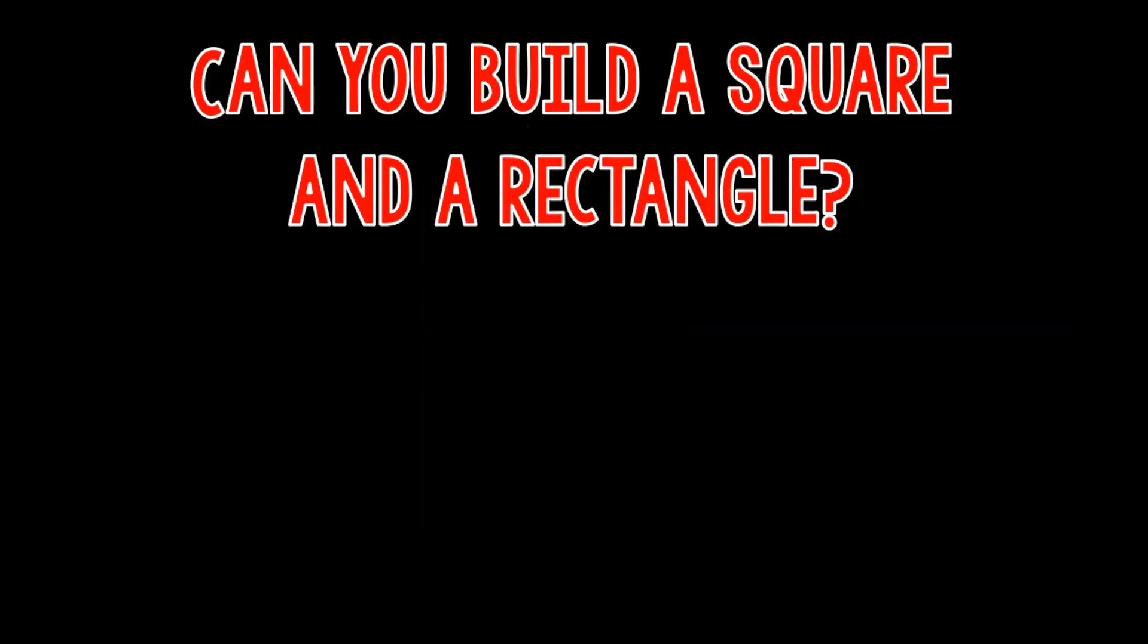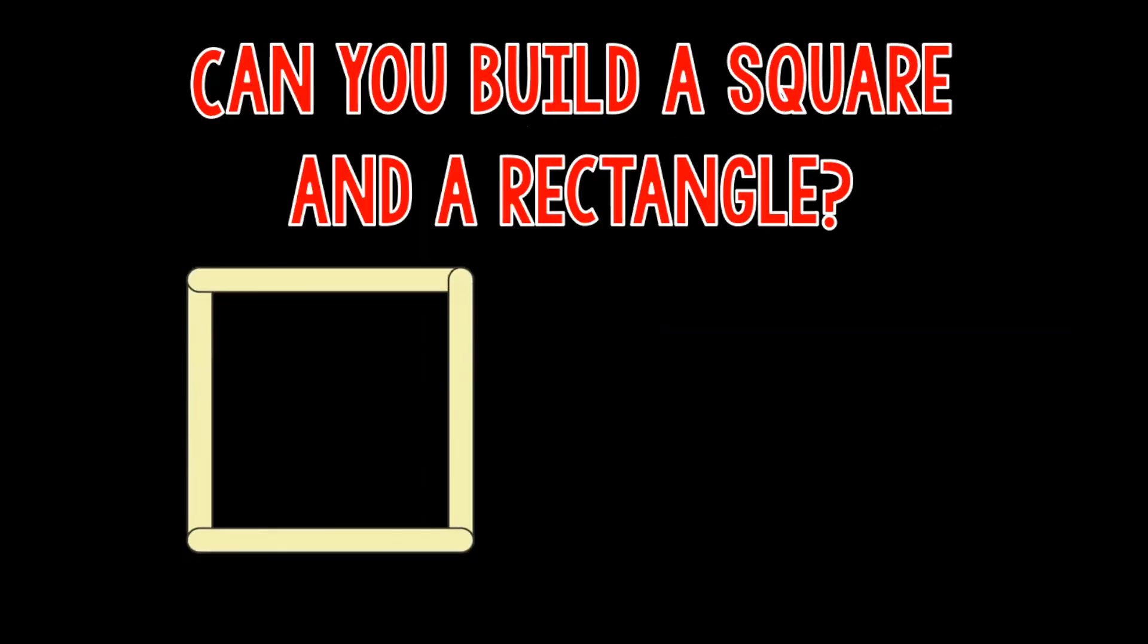Can you build a square and a rectangle? If you're building a square, it has four equal sides. That's what makes it a square.